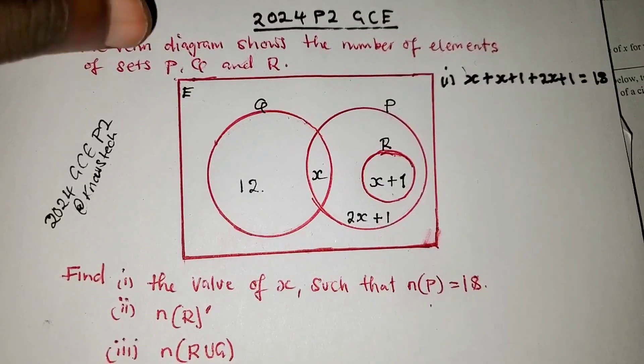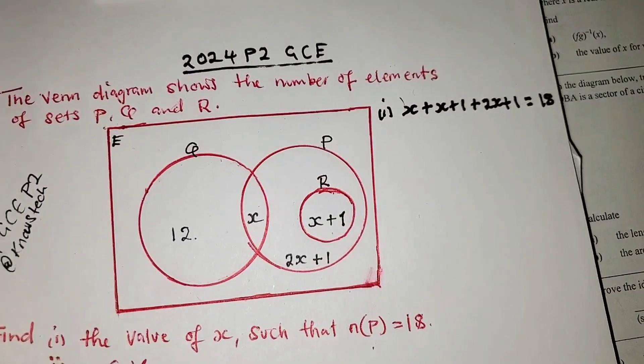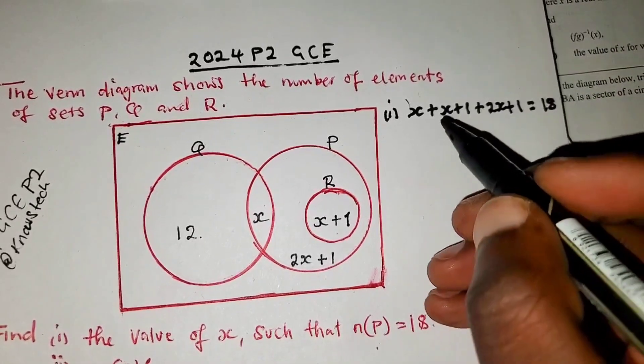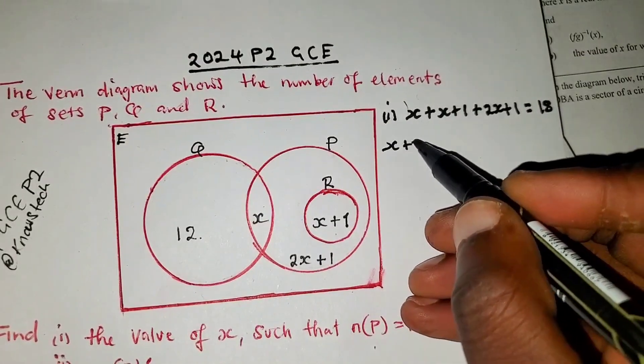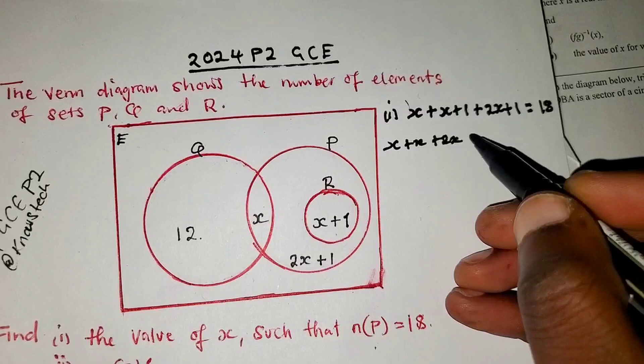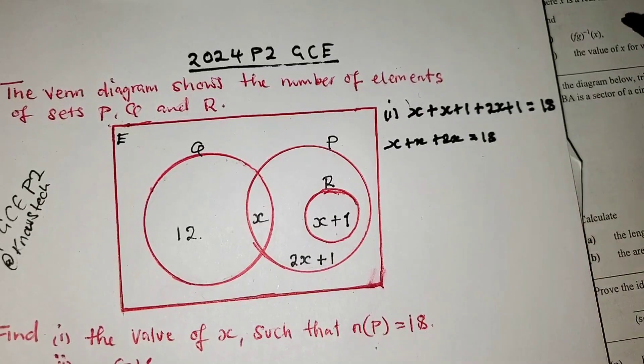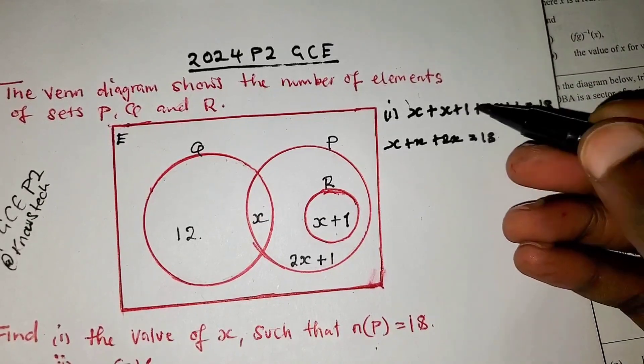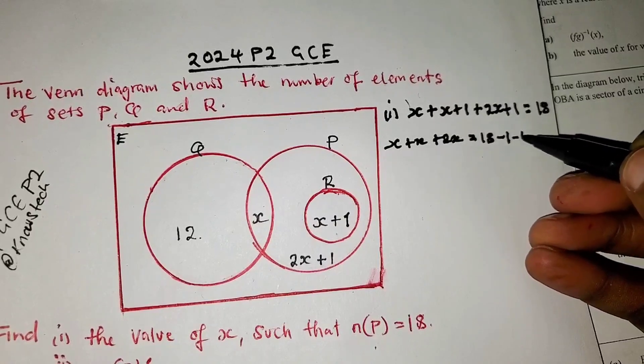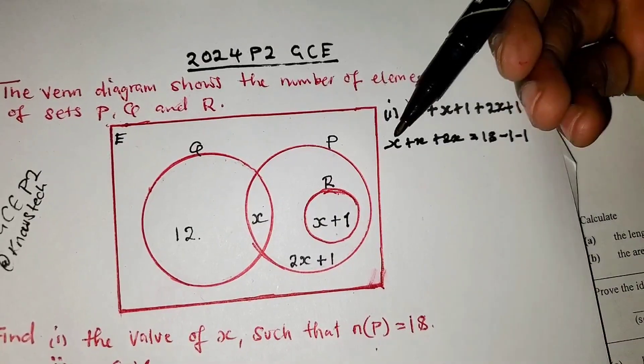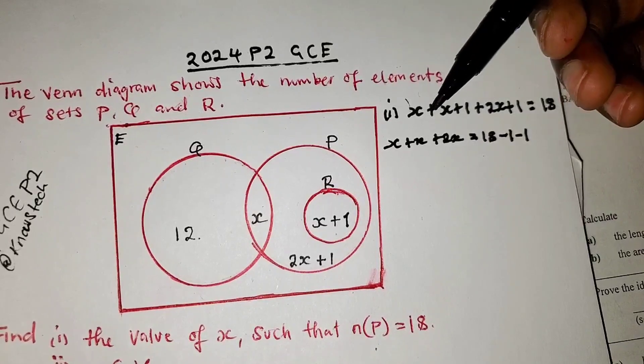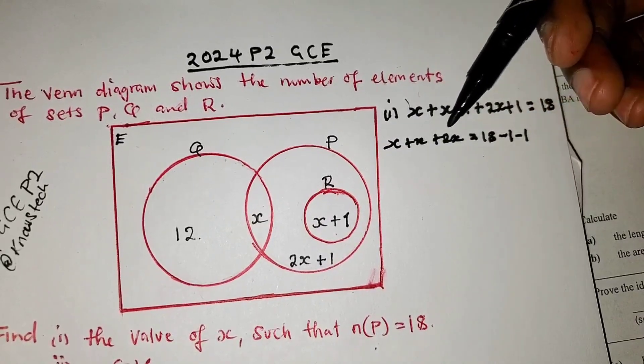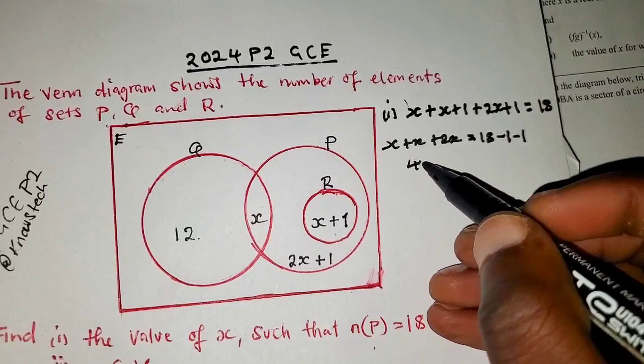Then we can group the like terms. So here there is x, this x, and here. The number in front of this x is 1 plus 1, 2, 2 plus 2, 4. So here we simply have 4x.